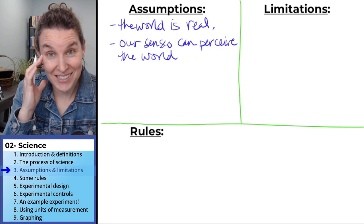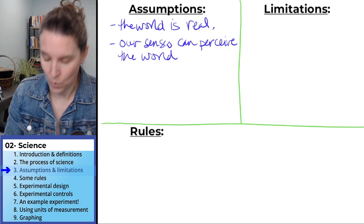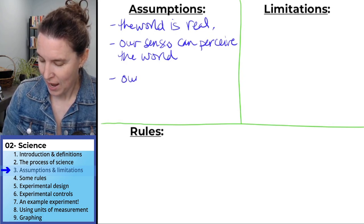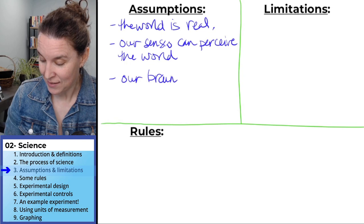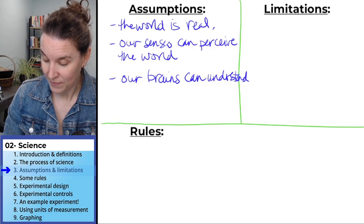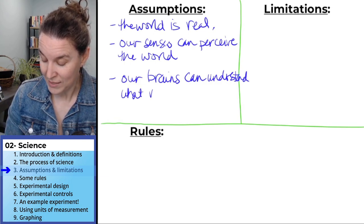Our brains can understand what we perceive. That's our third assumption. Our brains can understand what we sense.